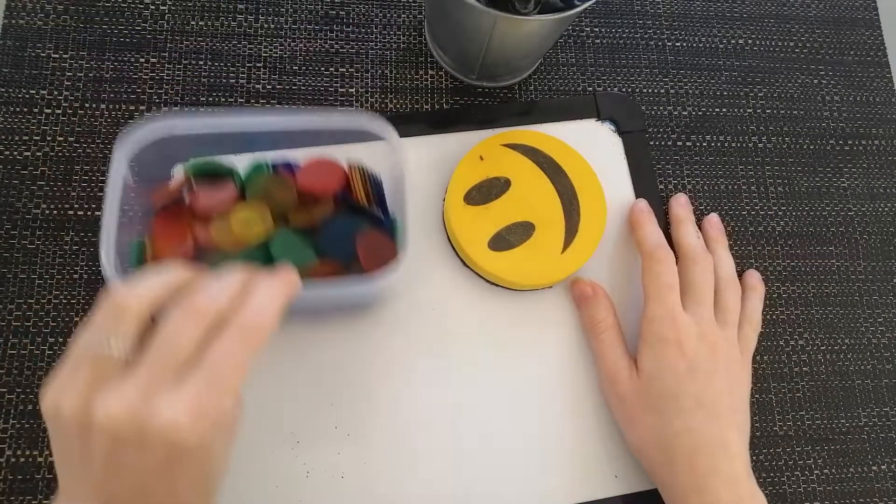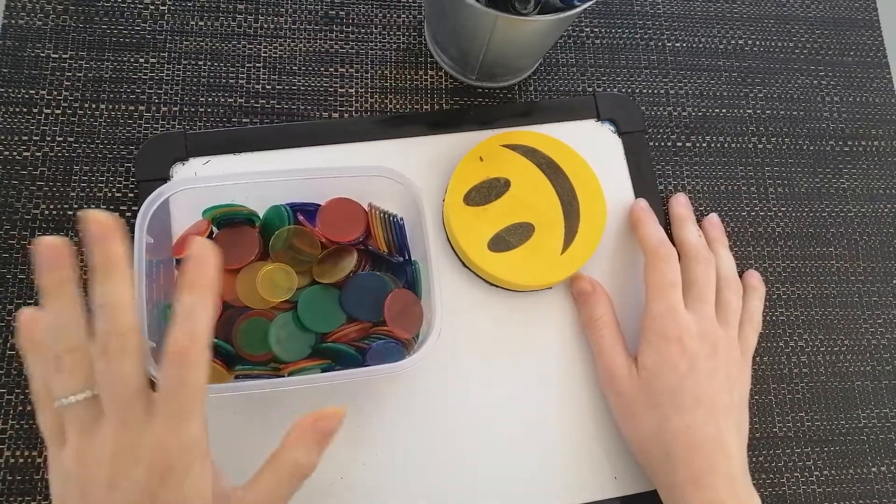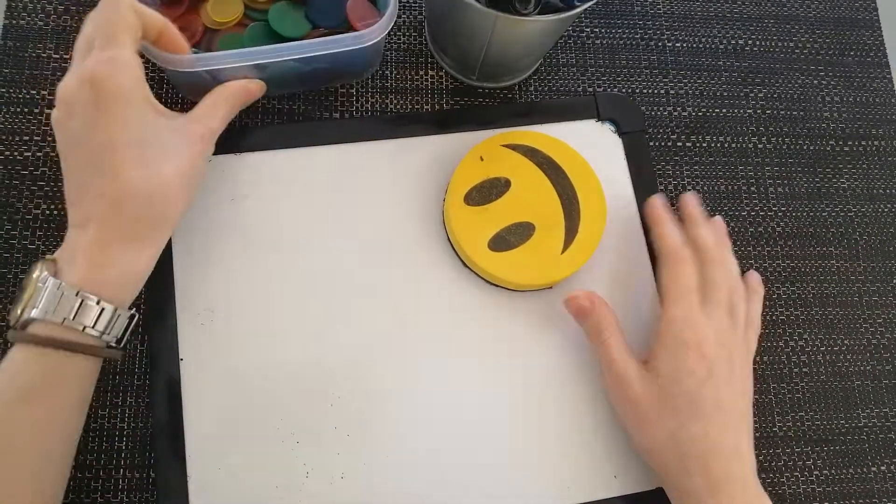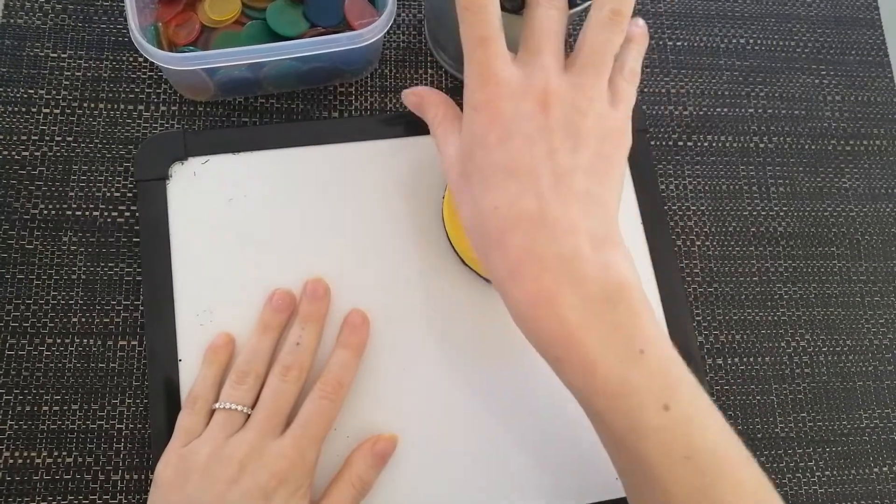For this activity you will need counters or blocks or anything that you have that is close to these. You'll need your whiteboard, a rubber and a texter.